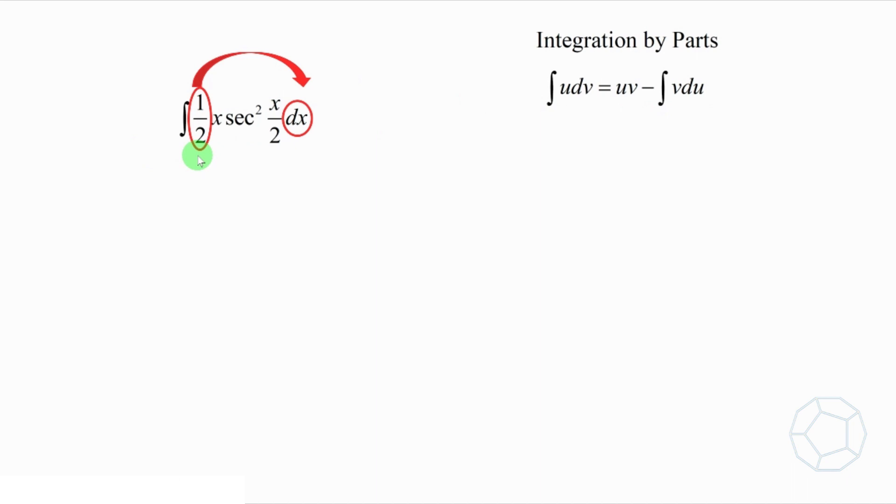How do we do that? We put the 1 over 2 inside the differential first to get the bracket x over 2. So, it's equal to integrate x sec² x over 2 d(x over 2). For the term sec² x over 2, we integrate it into the differential, which is the bracket tan x over 2.